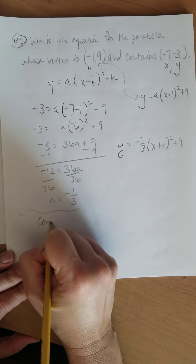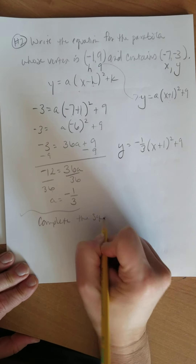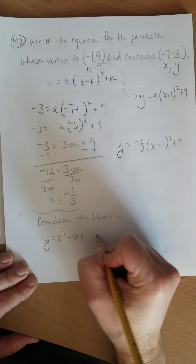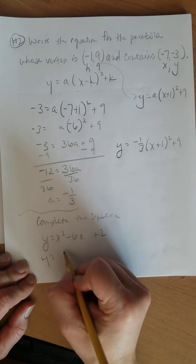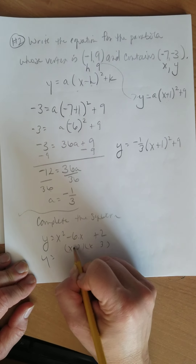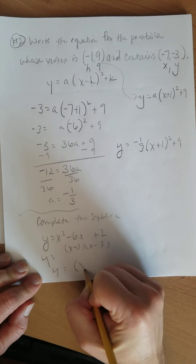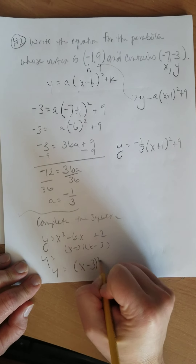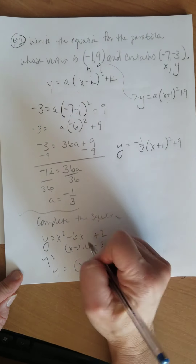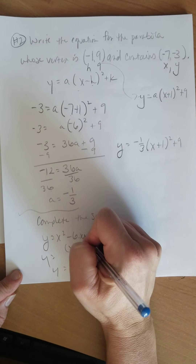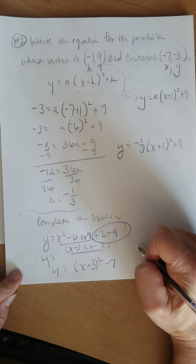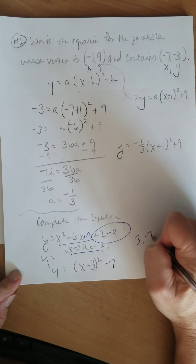Last one: completing the square. We have y equals x squared minus six x plus two. x squared comes from x times x, and six splits into three and three, both minus — giving y equals (x minus 3) squared. The outside terms are negative three times negative three, which is plus nine, so we subtract nine. Two minus nine is negative seven. Vertex is at (3, −7).